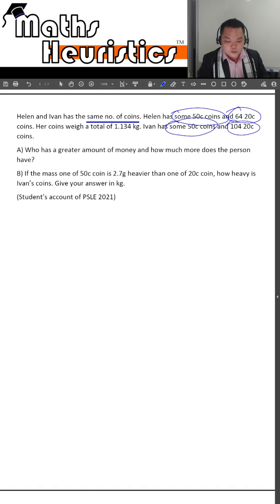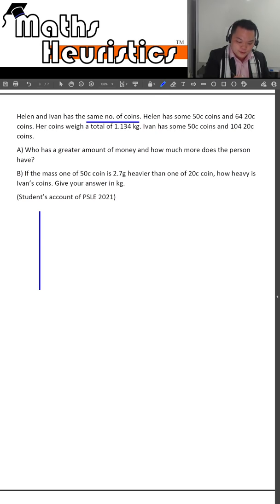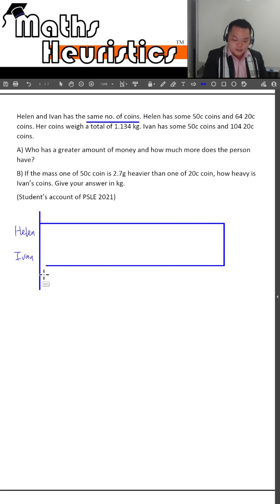So if you feel that this looks a bit confusing, it's okay. When in doubt, draw it out. You have Helen here and you have Ivan here.